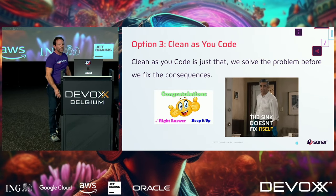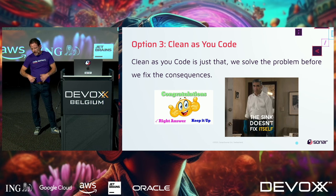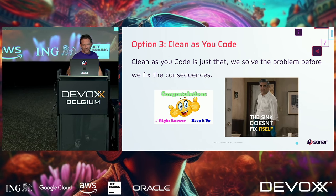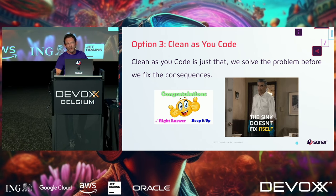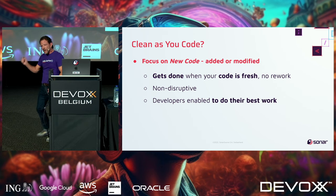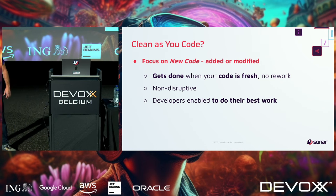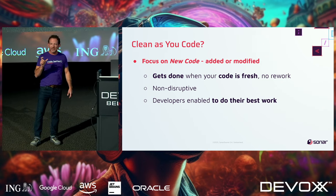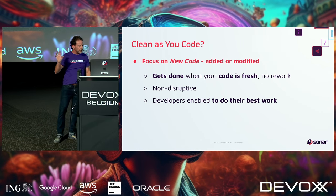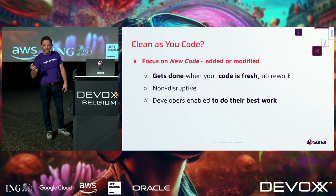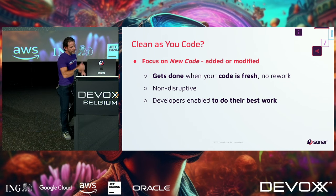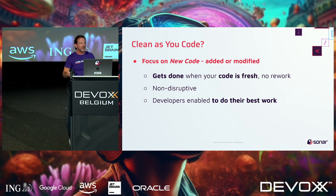Option three is our solution: clean as you code. It fits right into your development process as you're developing. The idea is to start with new code or modified code and care about that code — get it clean, functioning properly, highly cohesive, loosely coupled. It gets done when your code is fresh, when you're working. You're not setting chunks of time aside; you're cleaning your code as you're building features. It's non-disruptive, and this is when developers do their best work.